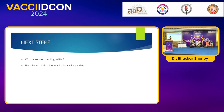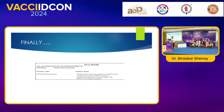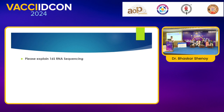16S rRNA can also be used in blood culture-positive cases where the blood culture is not phenotypically able to detect the organism — when the blood culture is inconclusive rather than negative. One important caution: in 16S rRNA, there are chances of contamination from the environment. So it is always better to do 16S rRNA from sterile fluid such as CSF. The technique is likely to become more widely available in coming years.